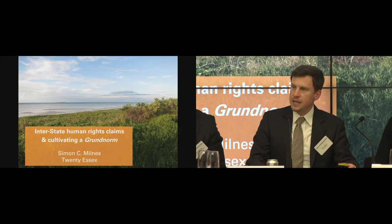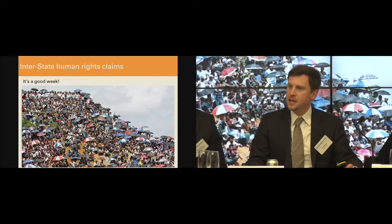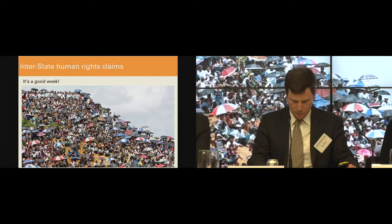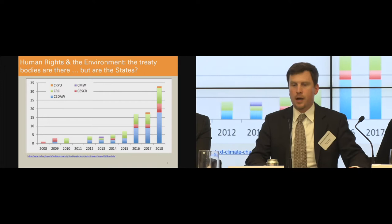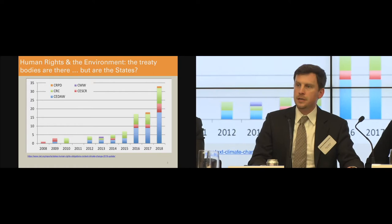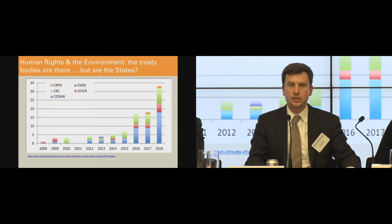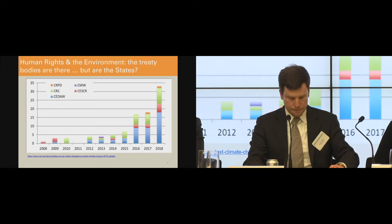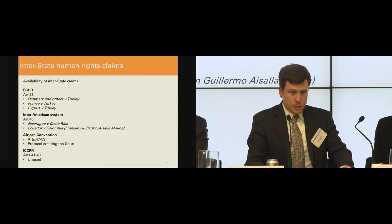Interstate human rights claims are a bit of a Cinderella option among disputes, but they are possible. It's a good week to say that because this is the week that The Gambia took the Republic of the Union of Myanmar to the ICJ over genocide — an inspiring thought that may lead others to think similar thoughts. Also, the UN treaty bodies are now across the issue of the human rights impacts of climate change — statistics from the Center for International Environmental Law in Washington DC show the increase over time in mentions of climate change in the concluding observations of the human rights treaty bodies, which are now regularly pulling up states about what they're doing on climate change.